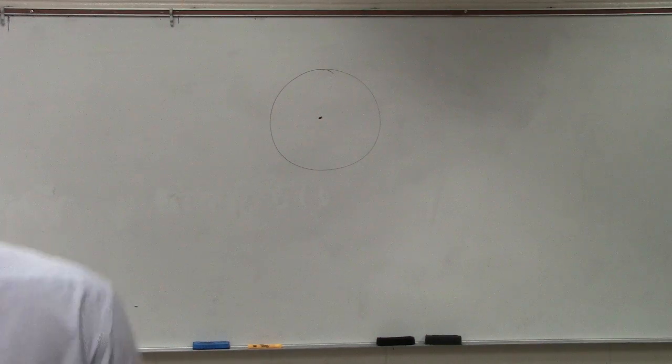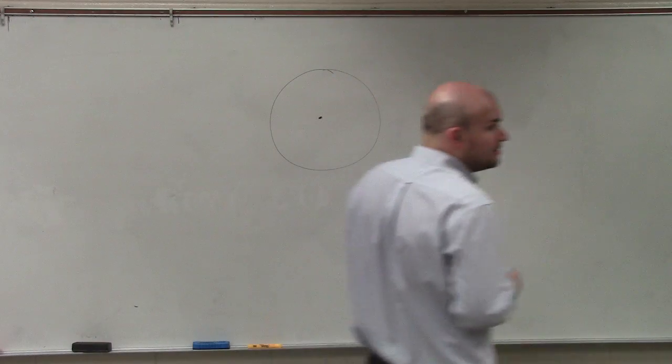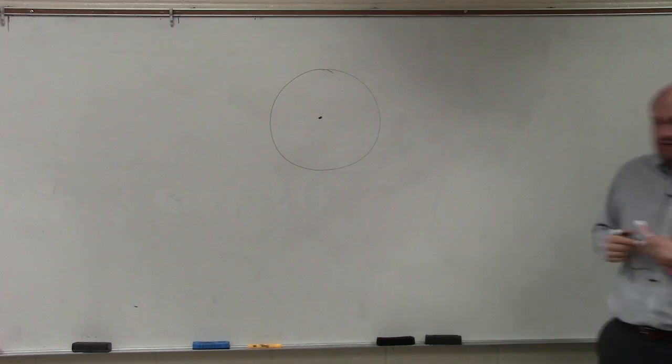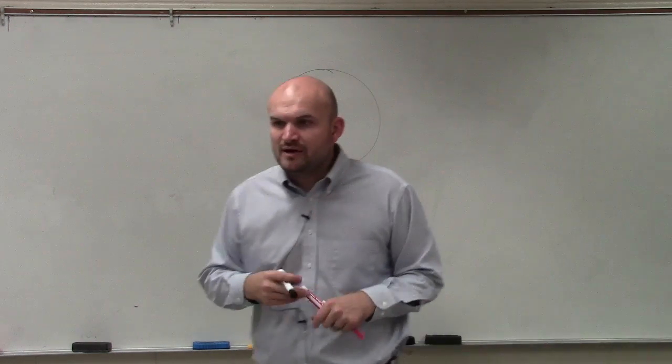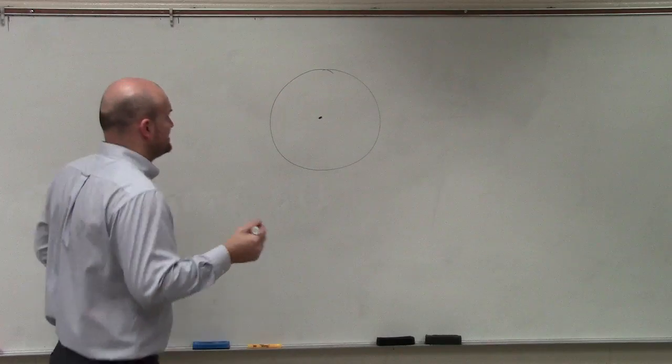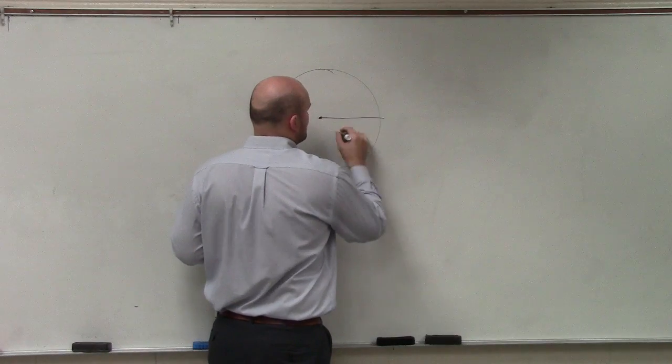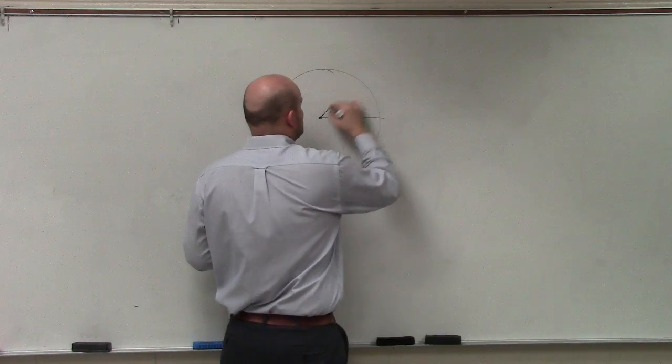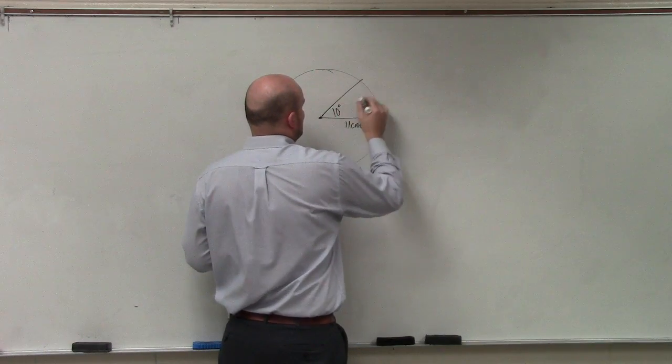Application problems. There are going to be application problems. This is number 35. It says you have this disk or a sector of a disk that has a radius of 11 centimeters. I believe it was 11 centimeters. And the angle that they have is 10 degrees.